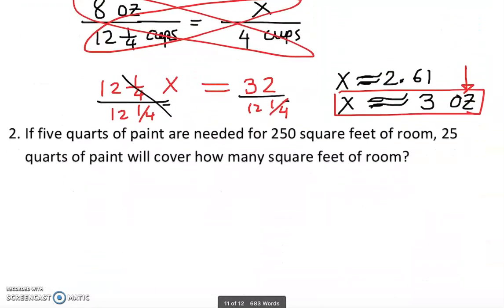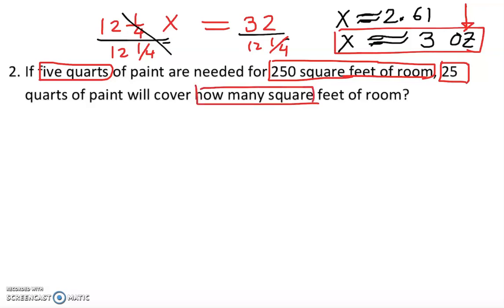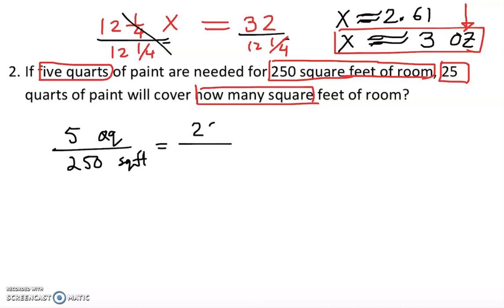Let's move to the next problem. What is known: five quarts are needed for 250 square feet of room. We also know 25 quarts — but for how many square feet we don't know. So three things are known and one is unknown. We can convert the first sentence into a fraction: five quarts over 250 square feet equals 25 quarts over x square feet, matching units on the top.